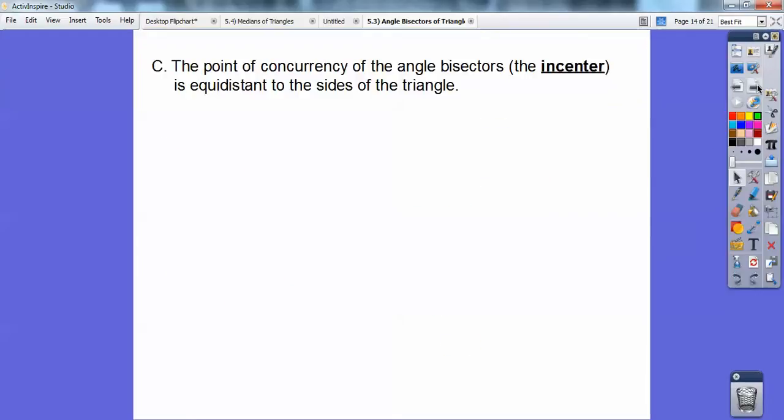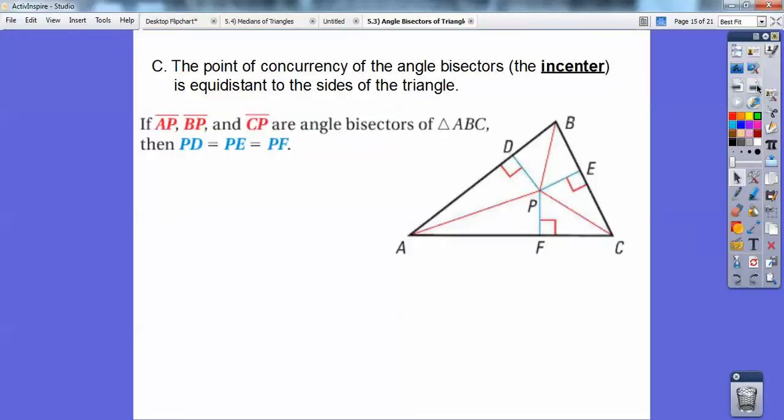The point of concurrency, remember concurrency means they all intersect in the same spot. The angle bisectors all intersect in the same spot, and that point of concurrency, which is called the incenter, is equidistant to the sides of the triangle. So if this is the incenter, because this is the angle bisector, and this is an angle bisector, and this guy is an angle bisector, they intersect right there at P. P would be the incenter, and that means that distance equals that distance equals that distance. It's equidistant to the sides of the triangle.